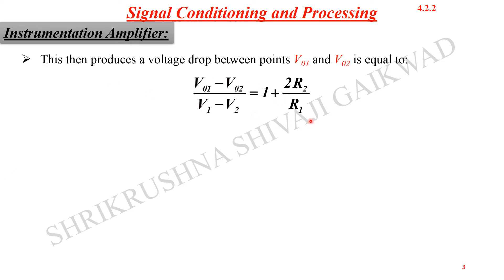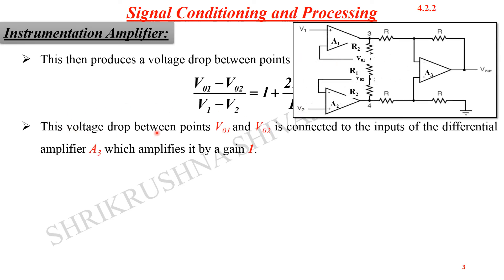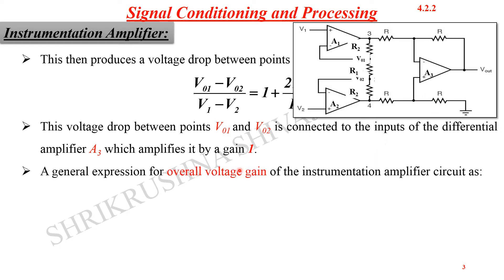The voltage drop ratio V01 minus V02 over V1 minus V2 is equal to 1 plus 2 times R2 divided by R1. In most cases R1 and R2 can be chosen to be equal, or depending on the requirement, this gain can be tuned by using R1. The voltage drop between points V01 and V02 is connected to the inputs of differential amplifier A3, which amplifies it by unity gain, acting as a buffer amplifier. The general expression for the overall gain is: Vout equals (V1 minus V2) times (1 plus 2R2/R1).